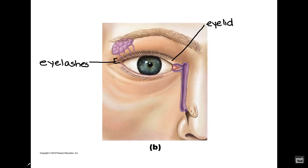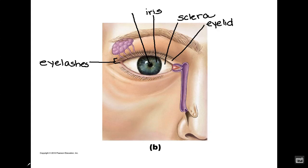With the eye itself, we have the white part of the eye, which is called the sclera. The pigmented part of the eye is called the iris. And then the black part of the eye, which is actually a hole in the iris that changes size, is our pupil.